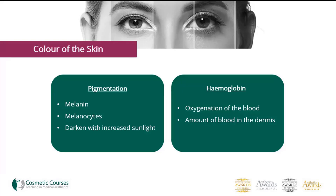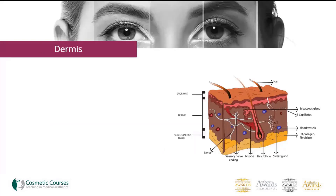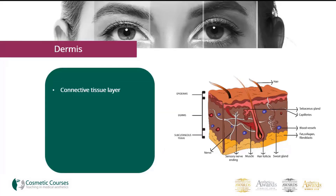When a person blushes, the blood vessels in the dermis dilate and hence the skin takes on a red appearance. The dermis is the next layer, made up of connective tissue such as collagen, fibroblasts, and histocytes.